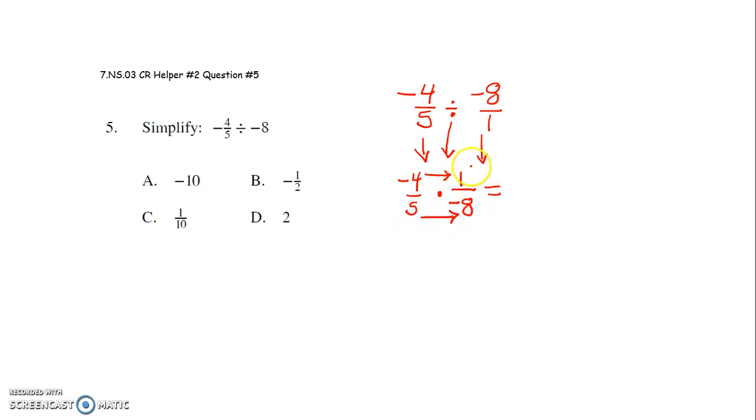Multiply straight across the top, straight across the bottom. Negative 4 times 1 is negative 4. 5 times negative 8 is negative 40.